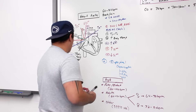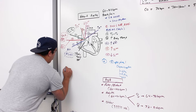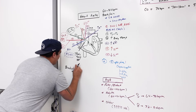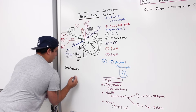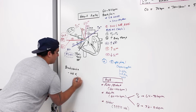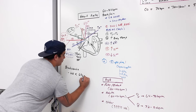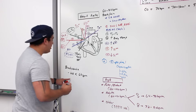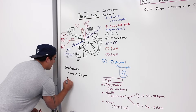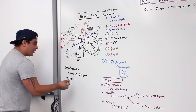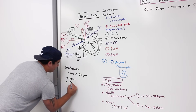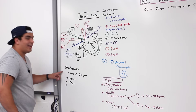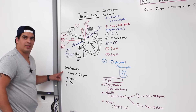Now two important terms: bradycardia is defined as a heart rate less than 60 beats per minute. Causes include parasympathetic nervous system activation, certain drugs, and interestingly, endurance runners — because their intense training strengthens the heart so much that stroke volume takes over as the primary driver of cardiac output.